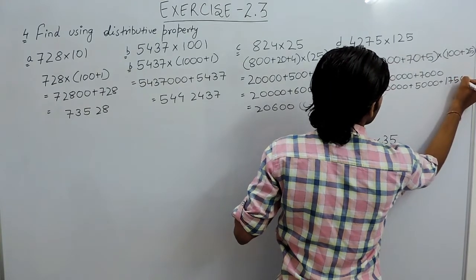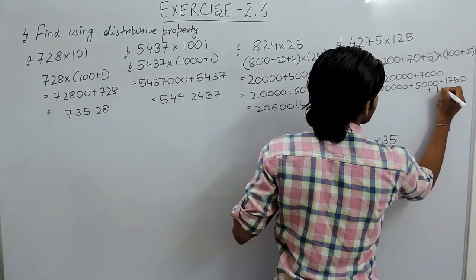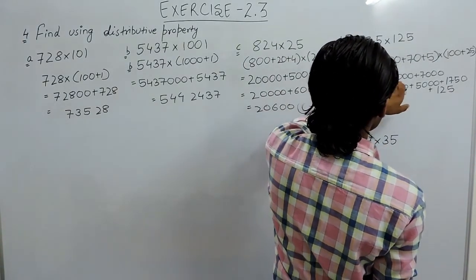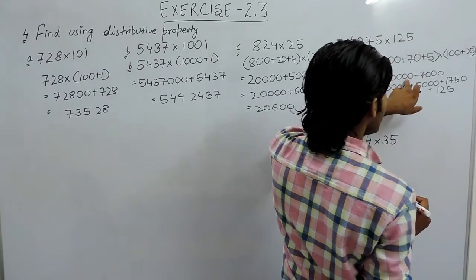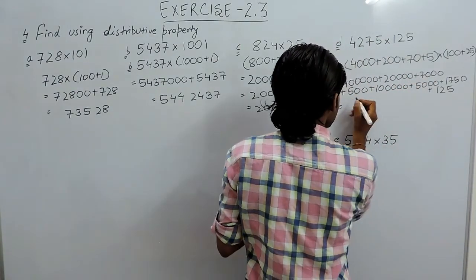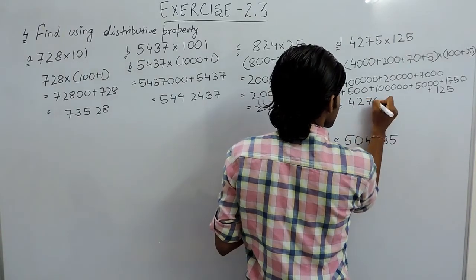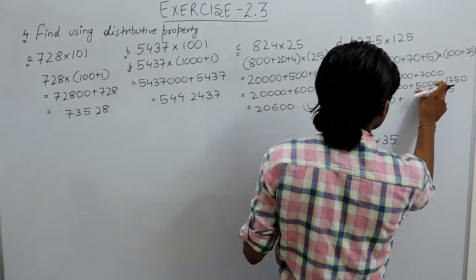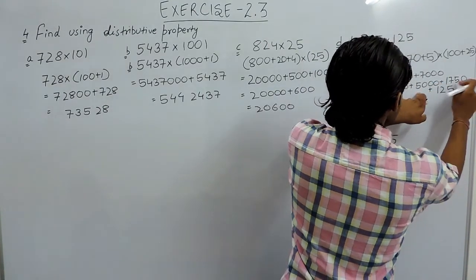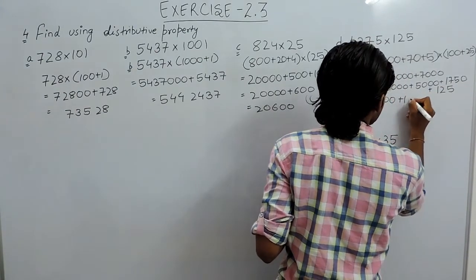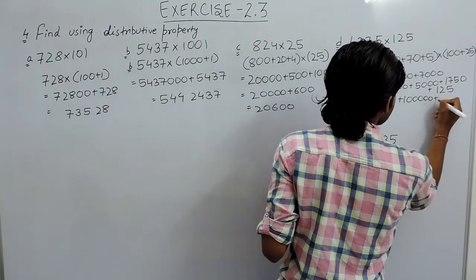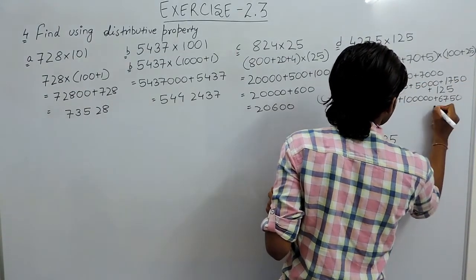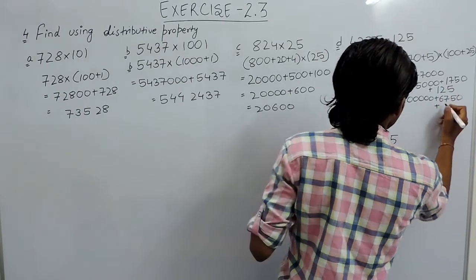So 175 along with... this is 100 and 80 plus 25 is 250, so we will add this. This is 4 lakh plus 20000 plus 7000 plus 500, plus 100000 plus 5000 plus 1750 plus 125. So we will add these.